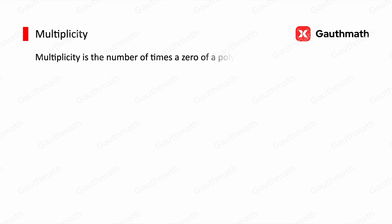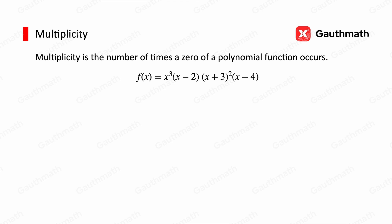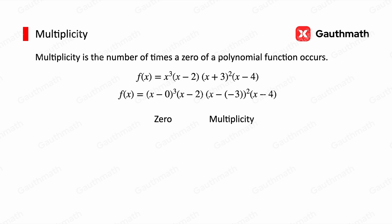Now let's move on to multiplicity. Multiplicity is the number of times a zero of a polynomial function occurs. Suppose we have f(x) equals x cubed times (x minus 2) times (x plus 3) squared times (x minus 4). We can identify the multiplicity based on the exponents. The zeros are 0, 2, negative 3, and 4. For x equals 0, the exponent is 3, so its multiplicity is 3. For x equals 2, the exponent is 1, so its multiplicity is 1. For x equals negative 3, the multiplicity is 2. And for x equals 4, the multiplicity is 1.